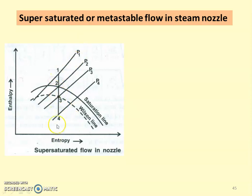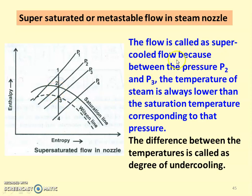For different expansion lines, similar vertical lines can be drawn. Through these points, we draw a dotted line called the Wilson line. Below the Wilson line the steam is wet steam. Between the saturation line and the Wilson line, the flow is called supersaturated flow or metastable flow. In this region the steam continues as dry saturated steam, and this phenomenon is called supersaturated or metastable flow in the steam nozzle. This flow is also called supercooled flow because between pressures P2 and P3, the temperature of the steam is always lower than the saturation temperature corresponding to that pressure. The temperature decreases but the process of condensation — the process of water formation — is delayed.